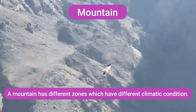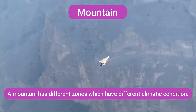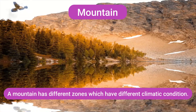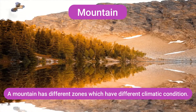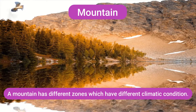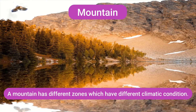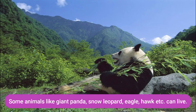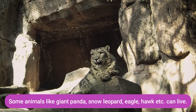Next natural habitat is mountain. A mountain has different zones which have different climatic conditions. We can find some animals like giant panda, snow leopard, hawk, eagle, etc. living in the mountain.